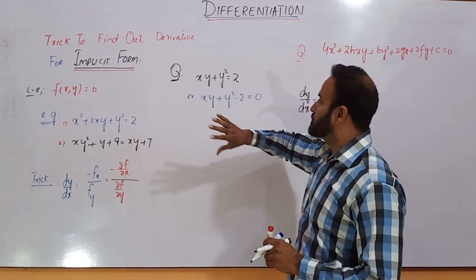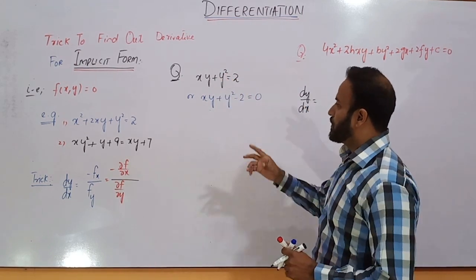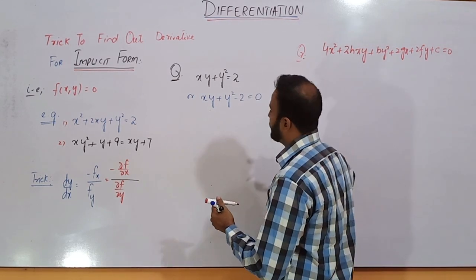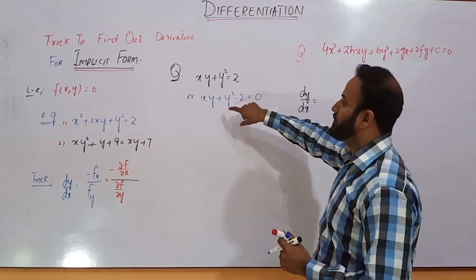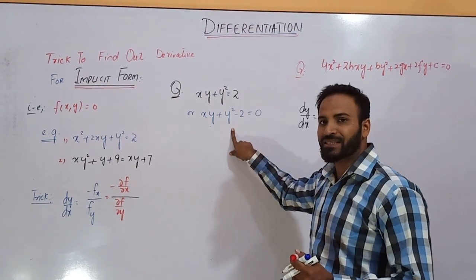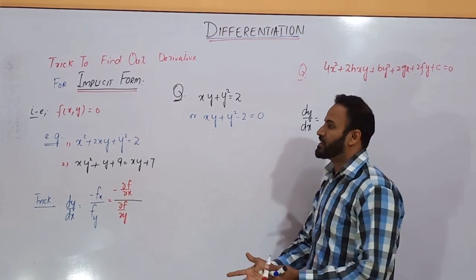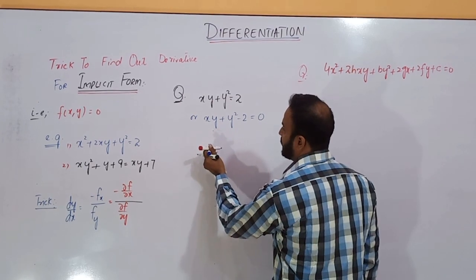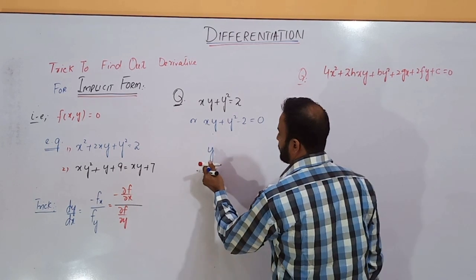Let's suppose I want to find out the derivative of this equation. How can I simplify or find out the derivative of this equation? First of all, I'm going to take the derivative of this equation with respect to x. When I take the derivative with respect to x, y behaves like a constant. So the derivative is y — no x term, no further derivative — divided by.